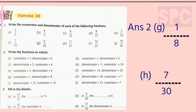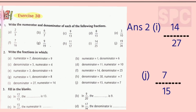Let's move on to part I — denominator is 27 and numerator is 14, so the desired fraction will be 14 by 27. Part J, denominator is 15 and numerator is 7, so the fraction will be 7 by 15. In this way we have done question number 2.